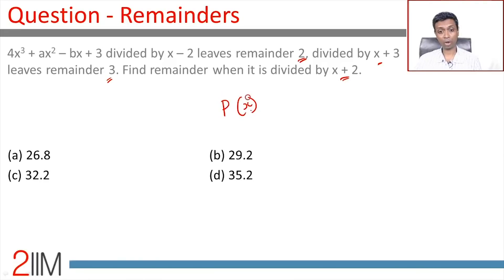When polynomial p(x) is divided by x - a, then the remainder is p(a). This question is a very simple question.